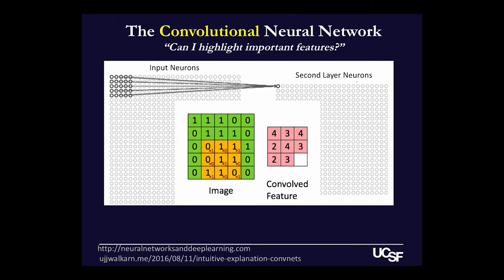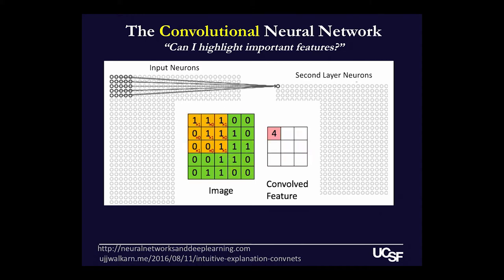The orange filter being slid across the green image with its pixel values does multiplication and addition, and for each position it generates a single number shown in pink. That gets assembled into its own little grid called a feature map or activation map. A convolutional neural network will use hundreds or thousands of these little filters, each with its own unique set of numbers and each generating its own feature map. They all get passed on to the next level, which often is another set of filters that works just like this, and when you start to stack these things together you start to generate higher-level feature detection.